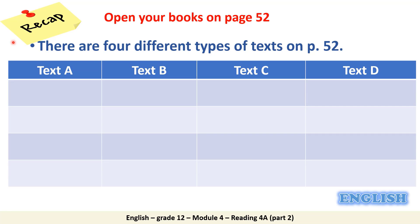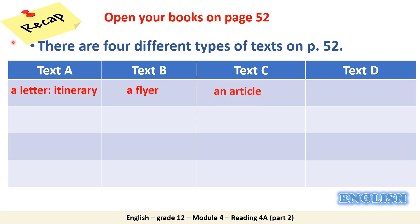What is the type of text A? It is a letter. What about text B? It is a flyer. Text C is an article. And finally, text G is an email.